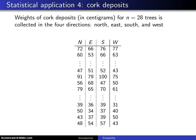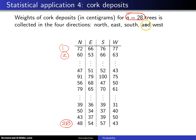In this next application, we have a statistical application that involves four different variables being collected simultaneously. The weights of cork deposits, measured in centigrams, for N equals 28 — that is our sample size. So this is tree number one, tree number two, all the way up to tree number 28, with measurements collected in four directions: north, east, south, and west.